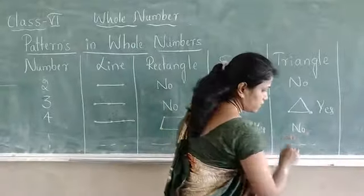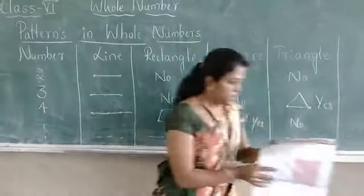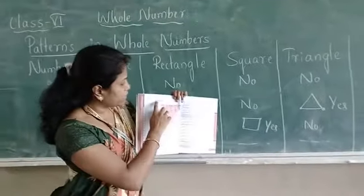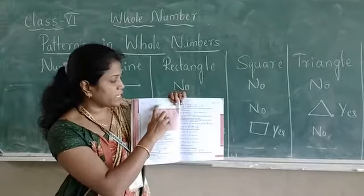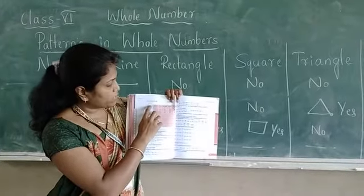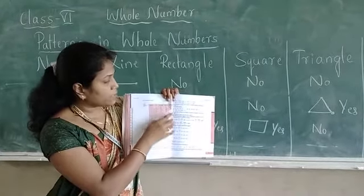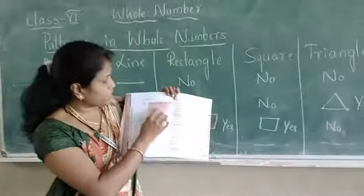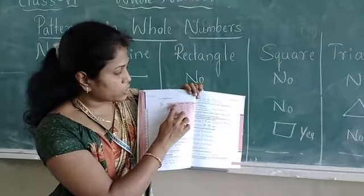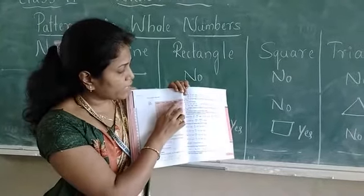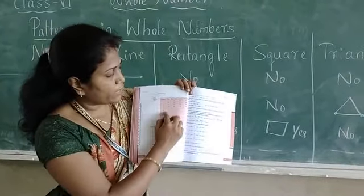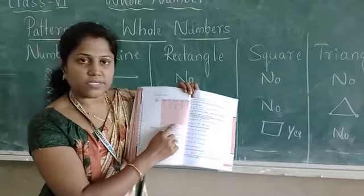Continuous — here, page number 42, one table is there. This one you have to complete the table. 1 is the special number, so don't write that one. Start from 2. Numbers: line, rectangle, square, triangle — this table you have to complete, okay.